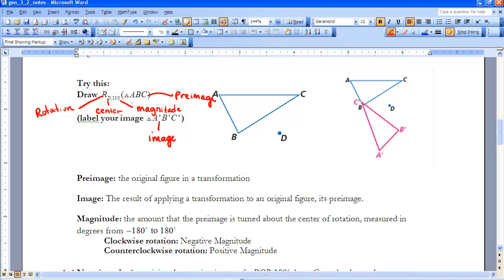so it's a positive 110, so we know that it would go counterclockwise. And the letters in parentheses is the name of the figure that's being rotated. So here this is my pre-image.